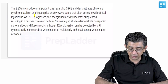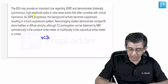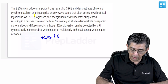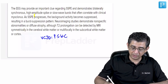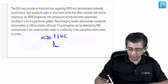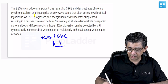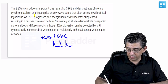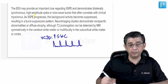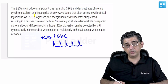In variant Creutzfeldt-Jakob disease, the term periodic sharp wave complexes refers to sharp waves present in the background rhythm occurring approximately every one second. We call these periodic sharp wave complexes against the background rhythm.